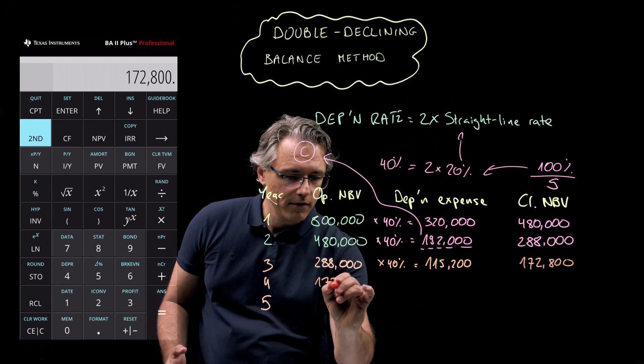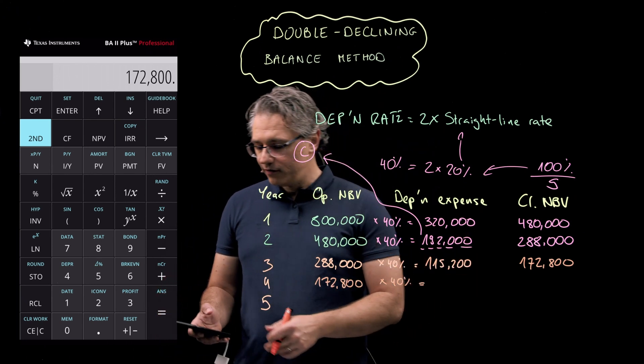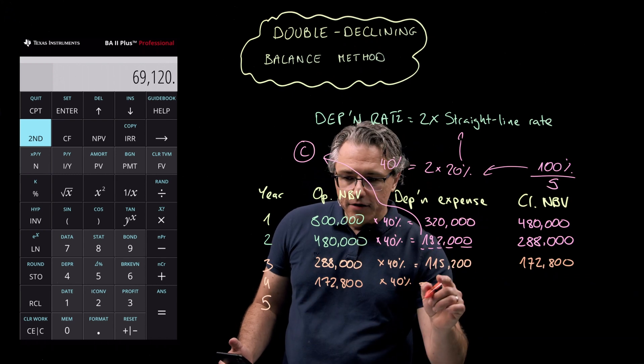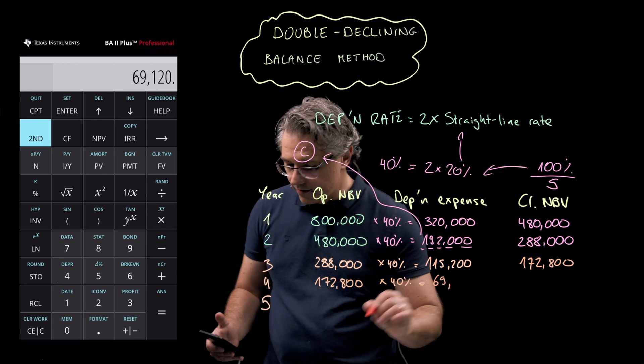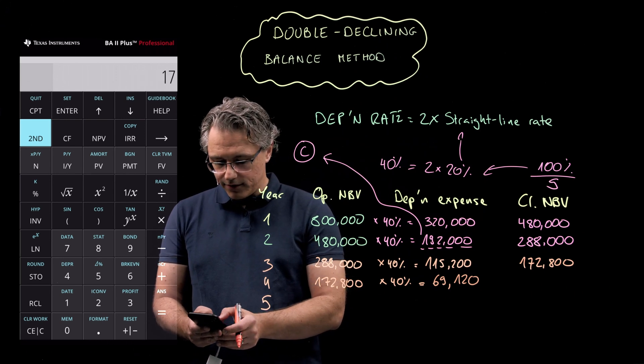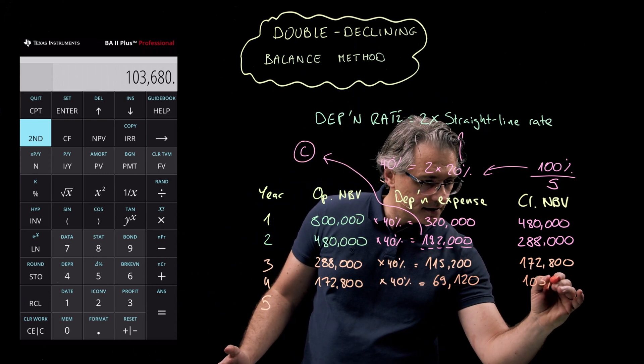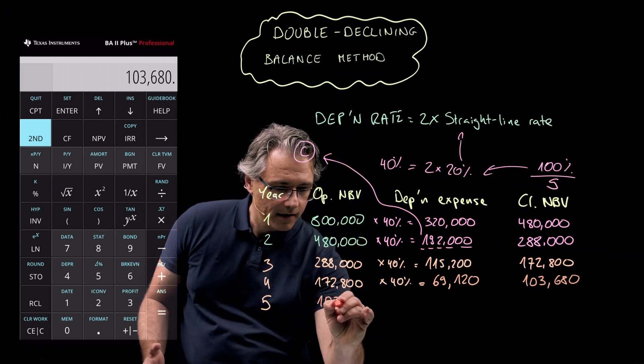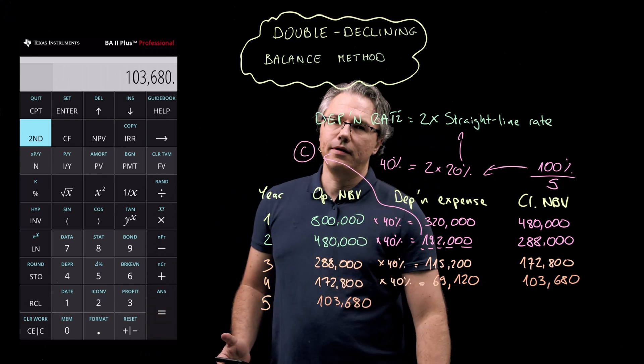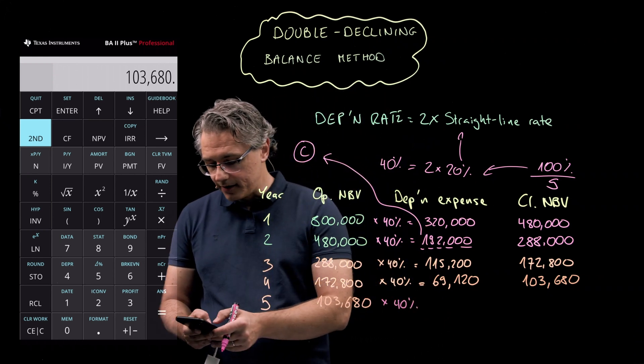Let's take this forward to the next year. 172,800 times 40%. Obviously in the exam, never go beyond what the question is asking for. I'm doing this only for educational purposes. So the depreciation expense in respect of year four is 69,120. Plug a minus in front of that figure, add 172,800. This is 103,680. And we start with this same number in year five. And if I applied 40% over here, let's see what we would actually get times 0.4.